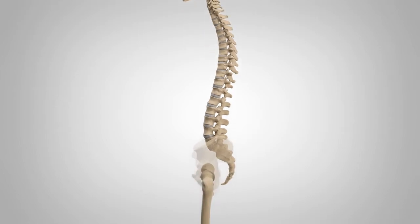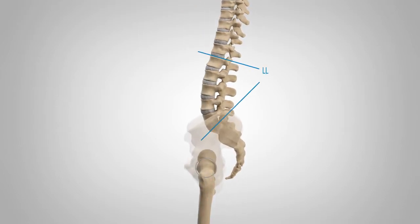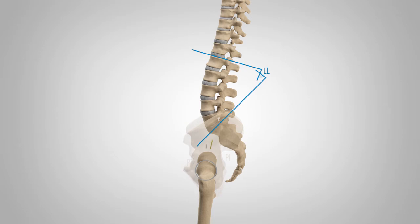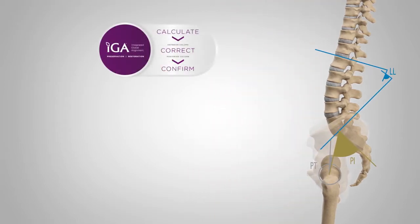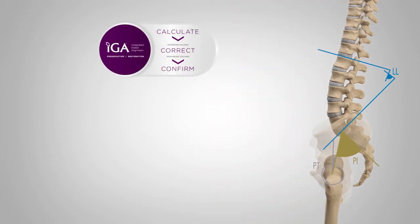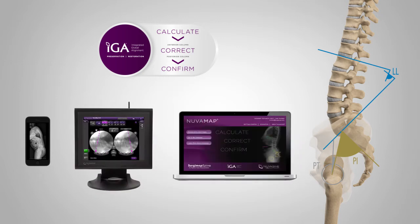Pelvic parameters are well established. Their relationship to thoracolumbar curvatures are proven to be key predictors in determining successful patient outcomes. And NuVasive's IGA platform allows for reproducible integration across the surgical workflow, increasing the predictability of achieving alignment goals.